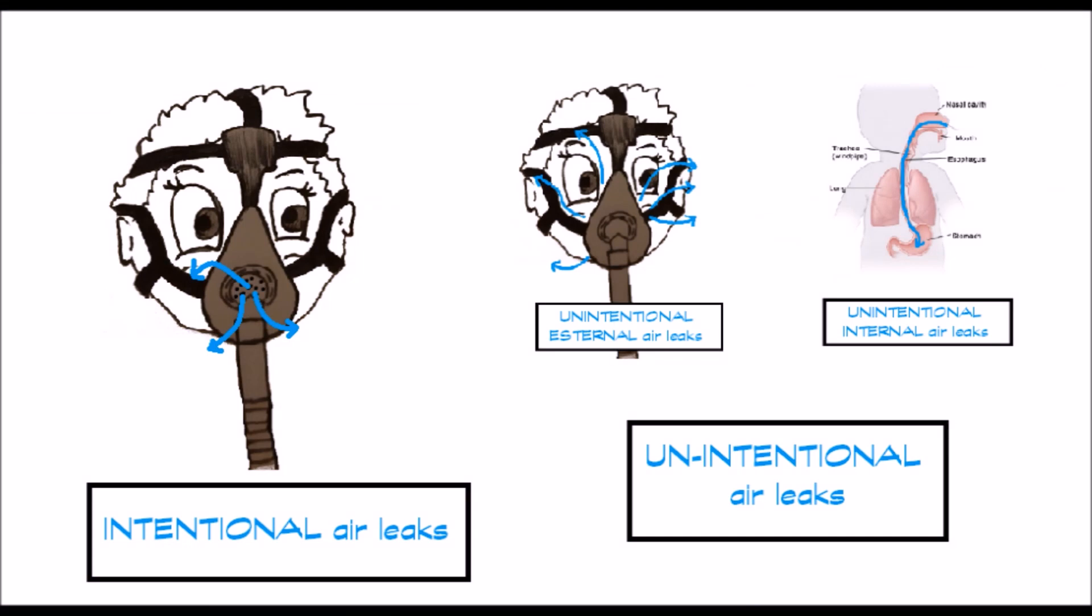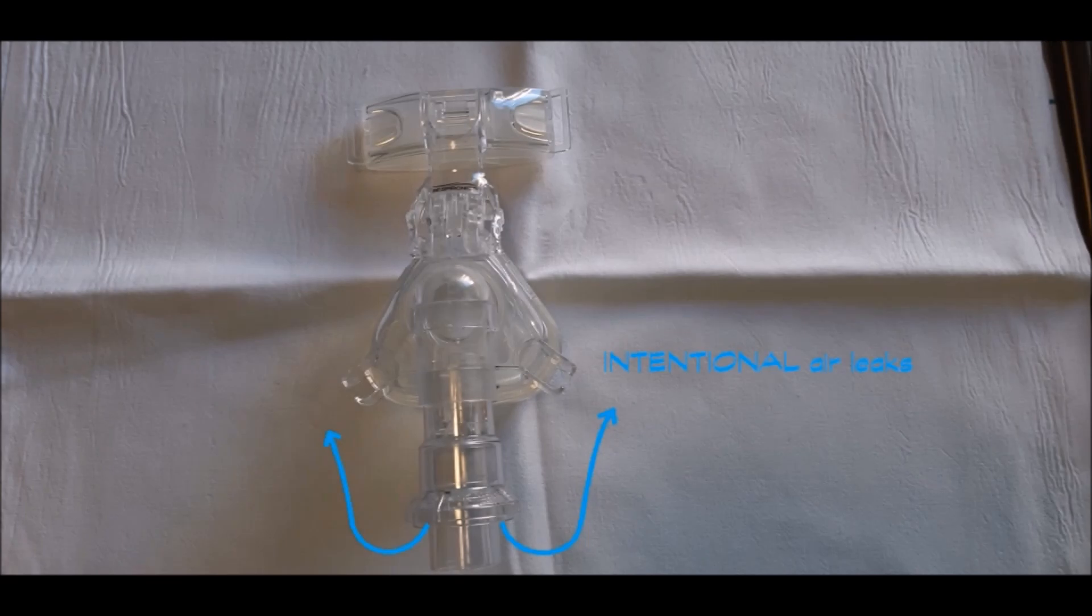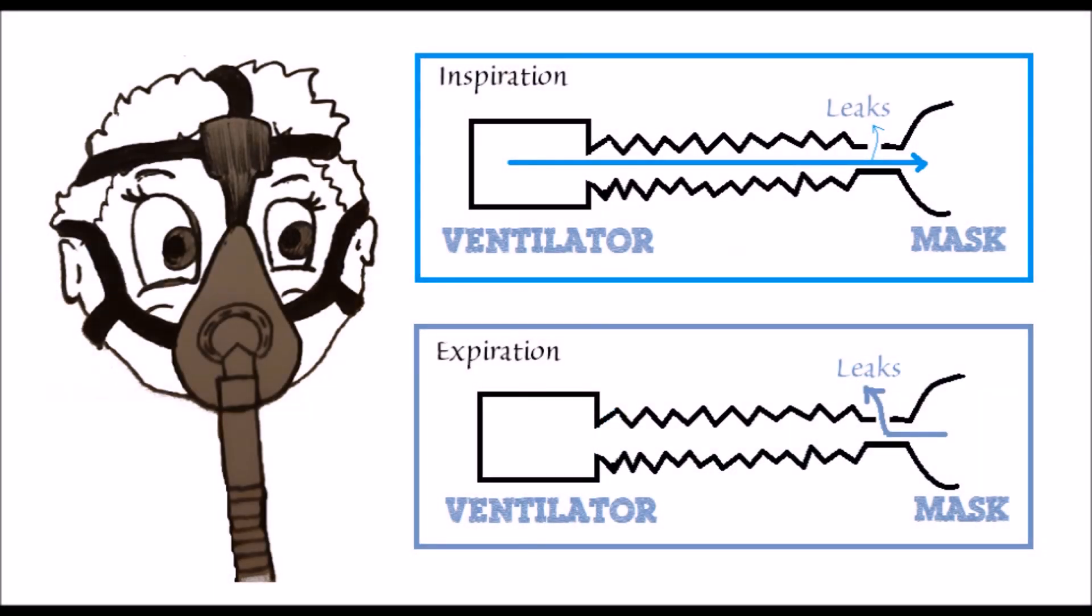During single limb non-invasive ventilation, two types of air leaks will occur. Intentional leaks, through the vented mask or the whisper swivel, occur through the entire respiratory cycle. During expiration, however, they increase, as exhaled air follows this pathway.